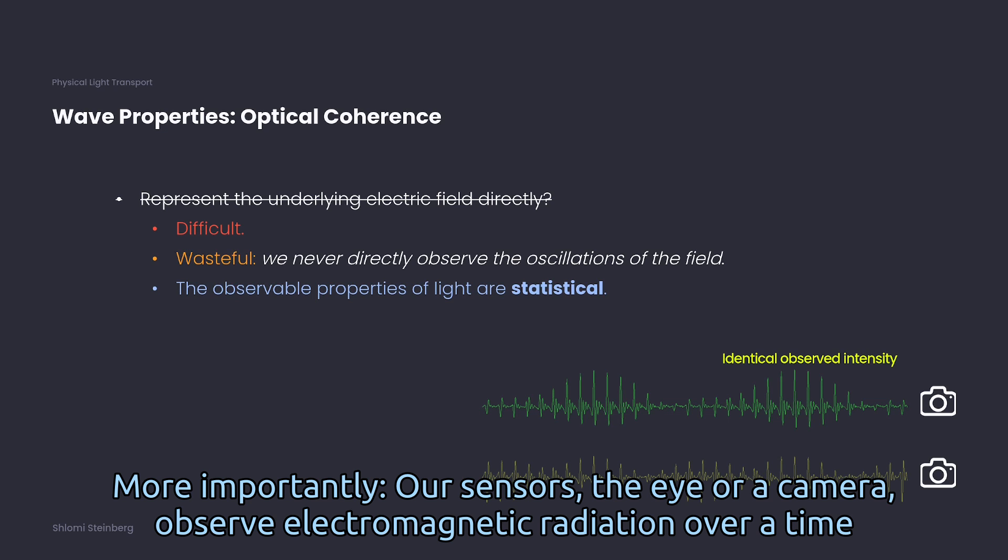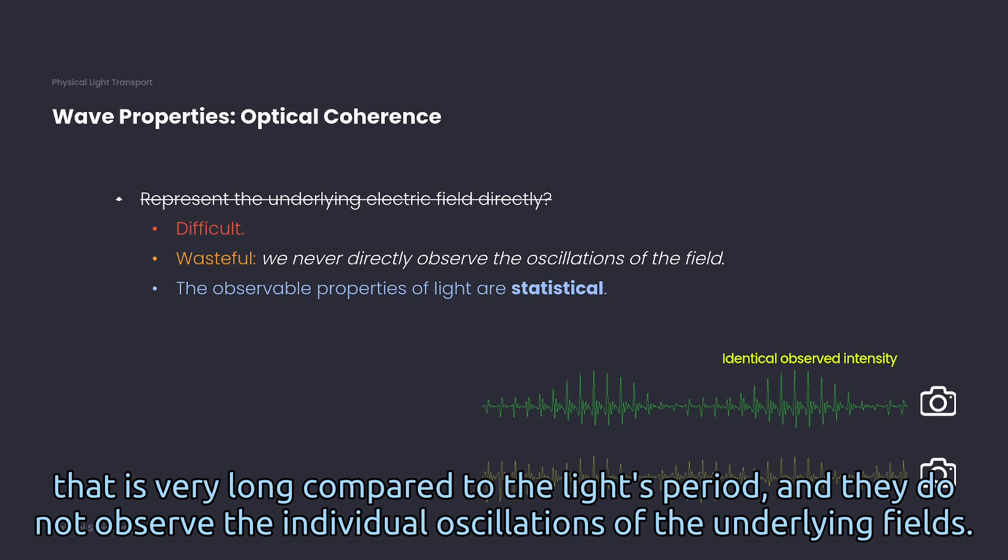More importantly, our sensors, the eye or a camera, observe electromagnetic radiation over a time that is very long compared to the light's period. And they do not observe the individual oscillations of the underlying fields.